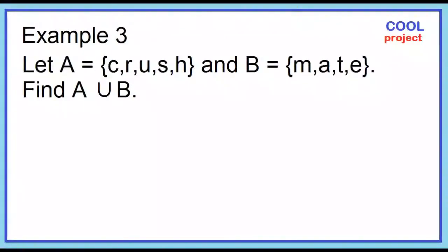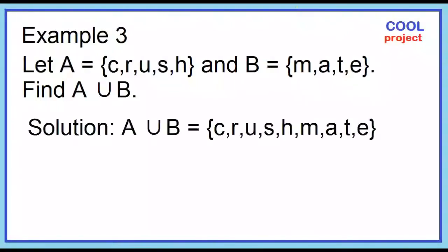Example number 3: Given set A and set B, find A union B. A union B contains C, R, U, S, H, M, A, T, E.